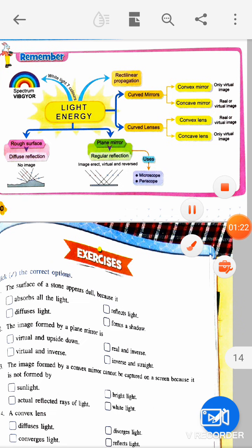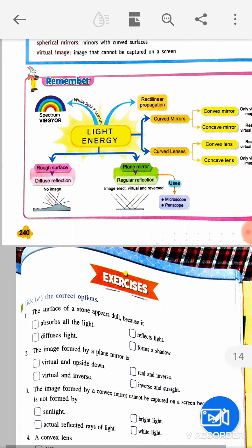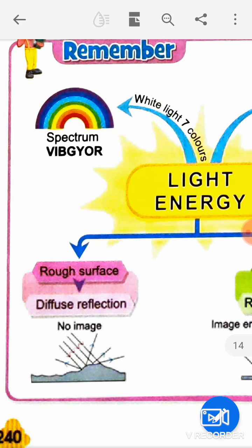Now here we have a mind map. Let's start with light energy. White light is made up of seven colors: V is violet, I is indigo, B is blue, G is green, Y is yellow, O is orange, R is red — VIBGYOR. In Hindi it is called 'happy nala': Ba is baigni, Ja is jamuni, Ni is nila, Ha is hara, Pi is pila, Na is narangi, La is lal.